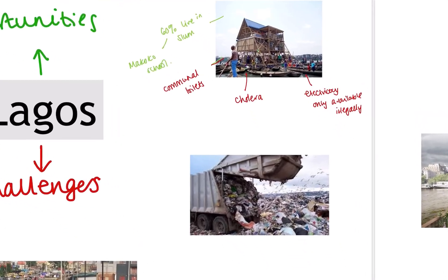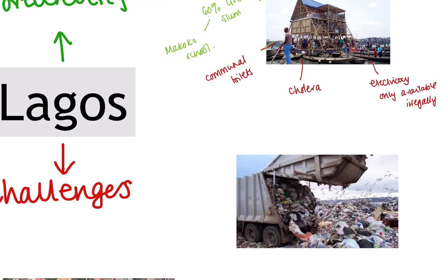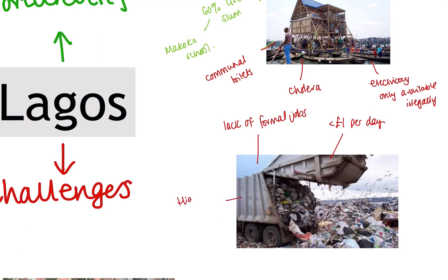Most people here are working in or from the slums — a lot are working on the rubbish dump. There's a lack of what we call formal jobs; informal sector workers are typically people the government doesn't really know about. Alongside this, people are living on less than a pound per day, so there's not a lot of money to buy food. These areas also experience a high crime rate and are policed by a group called the Area Boys — a gang set up as a form of self-policing, as the police aren't really interested in looking after this area.